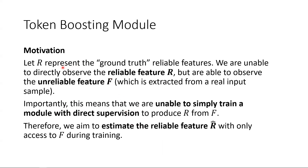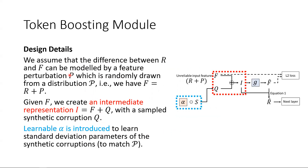Let R represent the ground-truth reliable features. We are unable to directly observe the reliable feature R, but are able to observe the unreliable feature F, which is extracted from a real input sample. Importantly, this means we are unable to simply train a module with direct supervision to produce R from F. Therefore, we aim to estimate the reliable feature R having only access to F during training. We assume that the difference between R and F can be modeled by a feature perturbation P, randomly drawn from a distribution P. In other words, we have F equals R plus P.